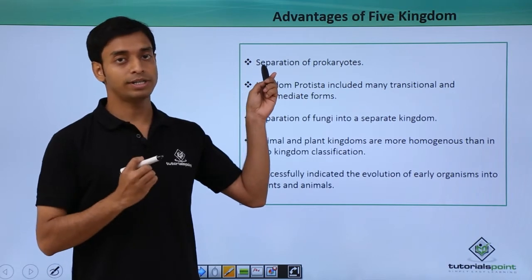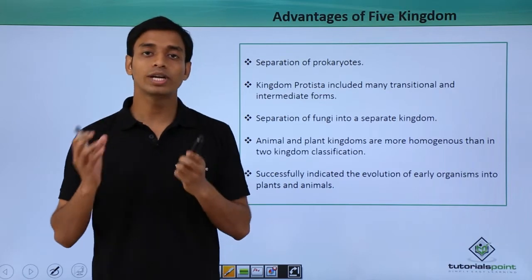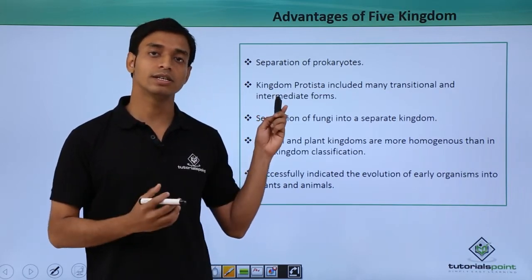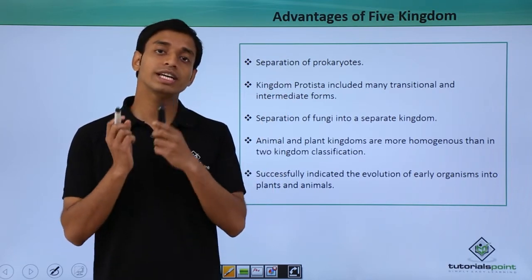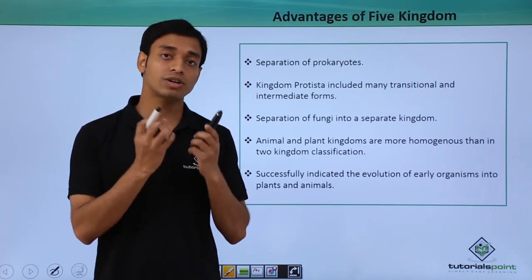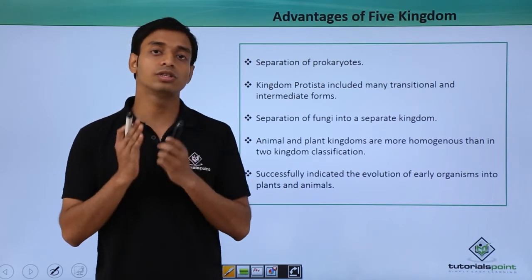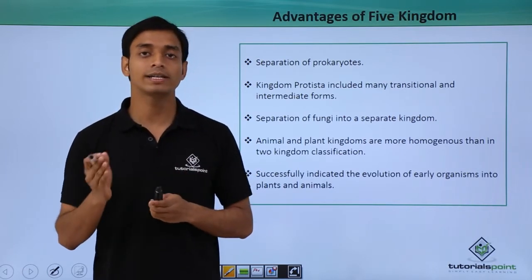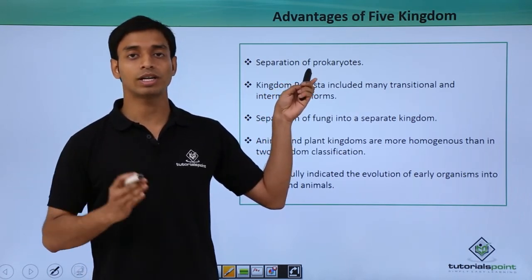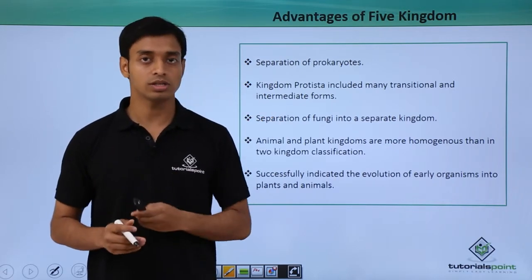The first important point is the separation of prokaryotes. Separation of prokaryotes from the eukaryotic organisms was a very important factor considered in this five kingdom classification, which was initially not considered. Prokaryotes have structures, organization, and formation that are very much different from those of eukaryotic cells. So this separation was a very important step in this five kingdom classification system.